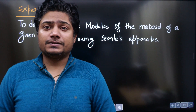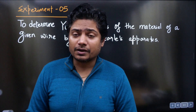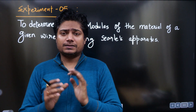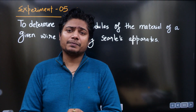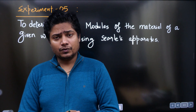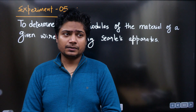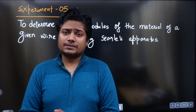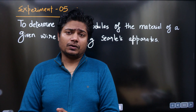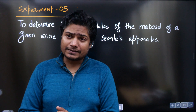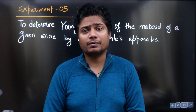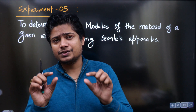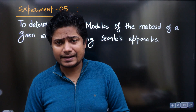Experiment number 5: Searle's experiment, or the experiment to determine the Young's modulus of a material. This is a pretty simple experiment based on a principle called Hooke's law. The apparatus used to measure all the values is called Searle's apparatus, named after the scientist who devised this setup to determine the small changes in length due to the additional weight added to the wire.